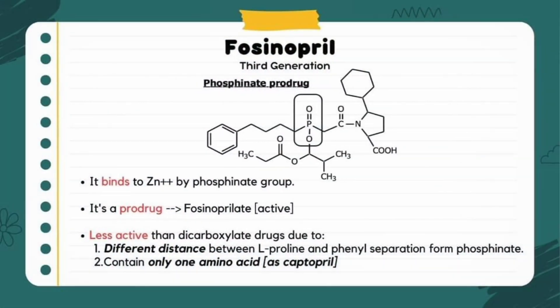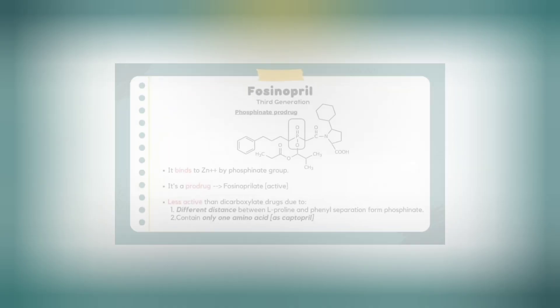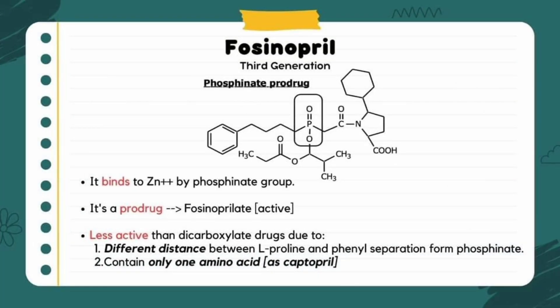Finally, phosphonapril is a phosphorus-containing ACE inhibitor drug. It binds with a zinc atom through its phosphonate group. Phosphonapril is a prodrug, which is converted into its active form phosphonaprilate. It is less active than other dicarboxylate-containing ACE inhibitor drugs, like enalapril and lisinopril.